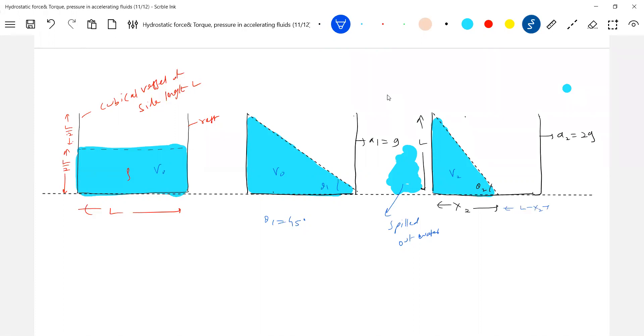Can we calculate for acceleration a2 how much water got spilled out? First, tan theta 2 equals l by x2. I think I wrote - this is also equal to a2 by g. So l by x2 is equal to 2g by g, so what is x2 equal to? l by 2.